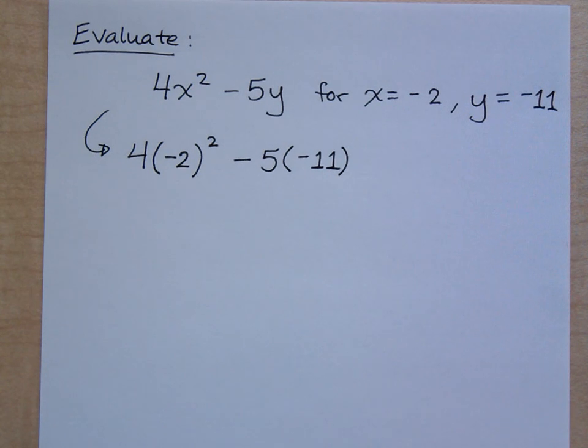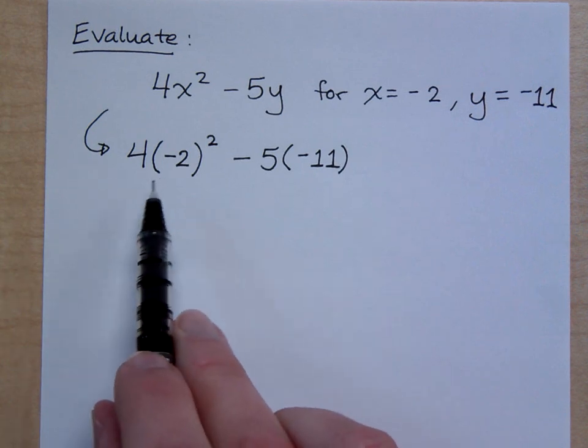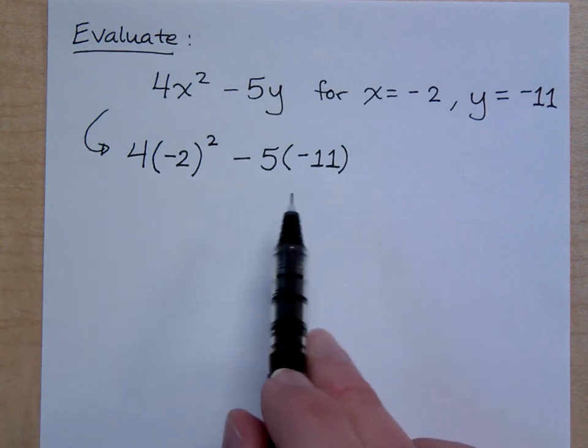Now, do I have any variables left here? No. What I have is an example of order of operations. So do what's inside the parentheses first. Negative 2 is done, negative 11 is done. I can't do anything else with that.